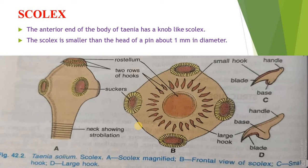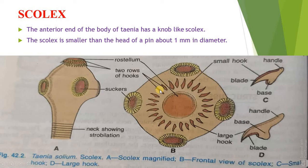The scolex is about 1mm in diameter with four cup-like muscular suckers having radial muscles, and an anterior round prominence — the rostellum — having about 22 to 32 curved chitinous hooks arranged in two circles. The chitinous hooks are in two circles: the inner circle with larger hooks and the outer circle with the smaller ones.